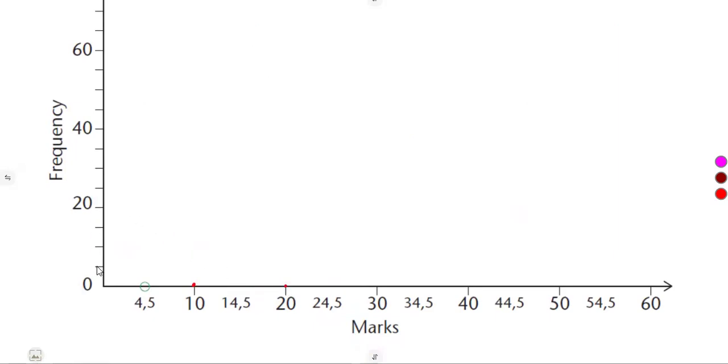According to this, this is 1, 2, 3, 4. So if we divide 20 divided by 4, it means it's 5. So it simply means this is 5, 10, 15, 20, 25, 30, 35, 40, 45, 50, 55, 60, 65, and so on.